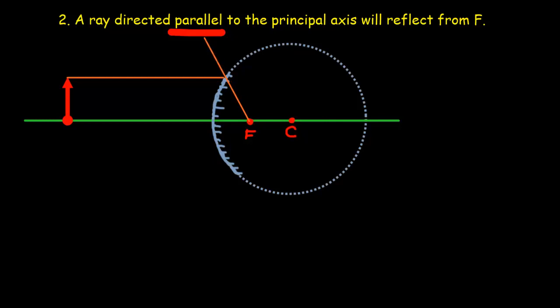So now if my reflection should be like it were coming from F, I'm going to make it a dotted line back here. There's no real light back here. The light comes in parallel to the principal axis and reflects as if it had come from F in that direction.